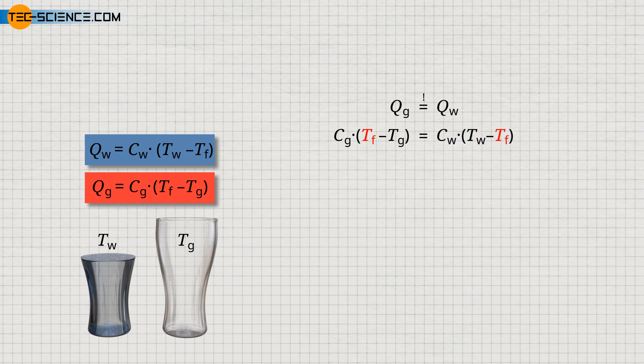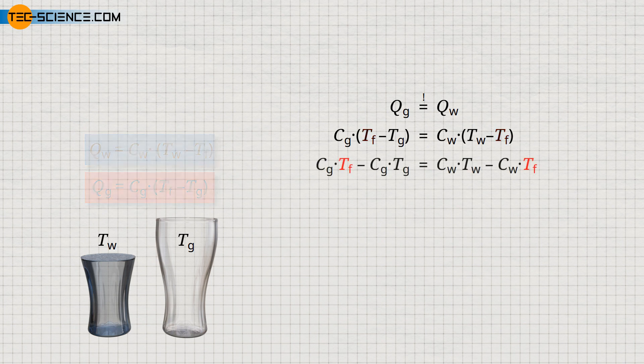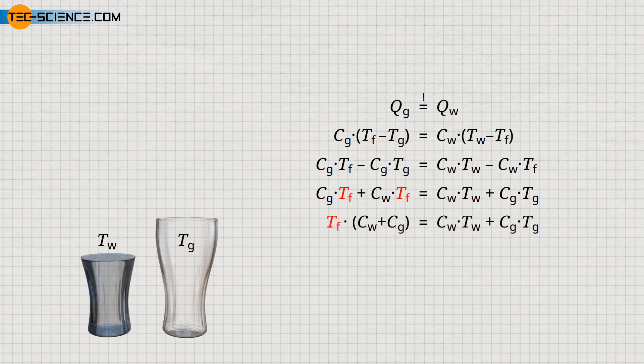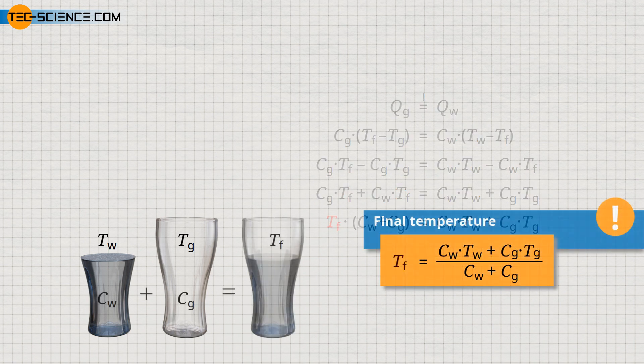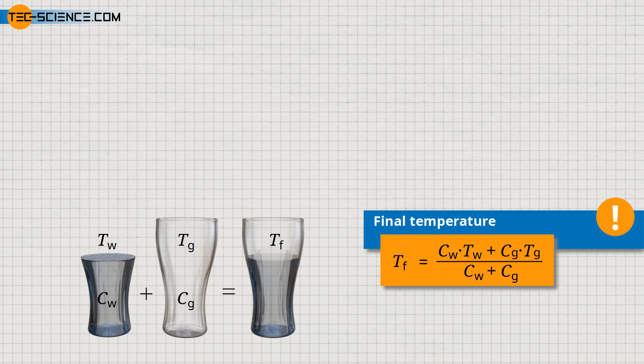So if we equate both equations, we see that with known heat capacities and initial temperatures, the only unknown quantity is the final temperature. We can therefore solve this equation for the final temperature. We first eliminate the round brackets by multiplying the term outside the brackets by each term inside. Then we arrange terms so that those containing the final temperature are on the left side and those containing the initial temperatures are on the right side. We then factor out the final temperature and divide the right-hand side by the term in the round bracket. This formula for calculating the final temperature is also known as Richmond's Law of Mixtures.